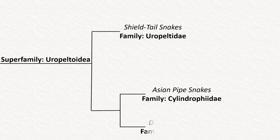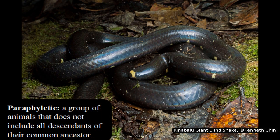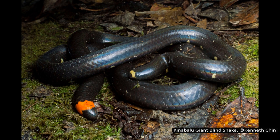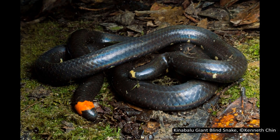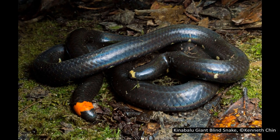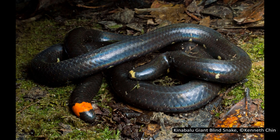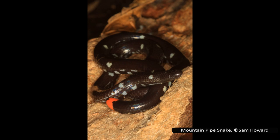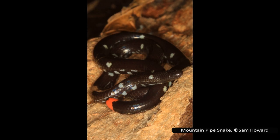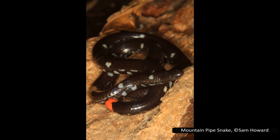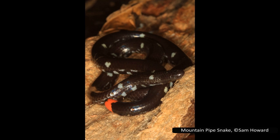The last family in Uropeltoidea is Anomochilidae, or the dwarf pipe snakes. Recent studies suggest these may be paraphyletic with the Asian pipe snakes and could be included in a single family in the future, though this has not been formally proposed. The dwarf pipe snakes have one genus with three species, found on the Malay Peninsula and the islands of Borneo and Sumatra. Their colouration is black to purple-brown with an orange-red band around their tail and some pale markings on the head. They are adapted to living underground and live in leaf litter and lowland and montane forests up to 1,500 metres above sea level. Like many fossorial snakes, they are poorly studied.